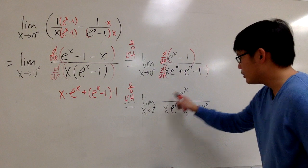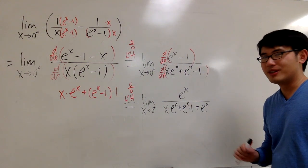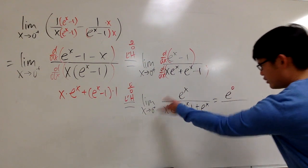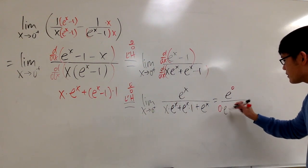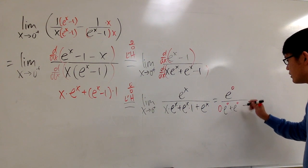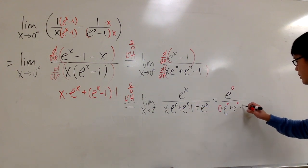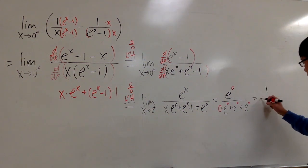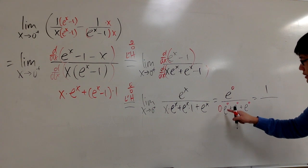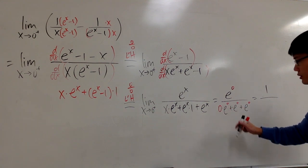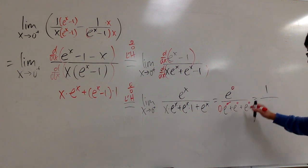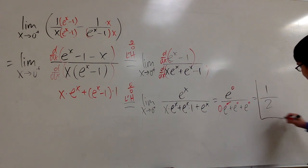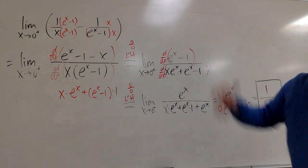Now plugging 0 into all the x — this time it's not going to be 0 over 0, we're actually done. On top, e to the 0 is 1. On the bottom, 0 times e to the 0 is 0, so that term vanishes. e to the 0 is 1, plus e to the 0 is 1, giving 1 plus 1 equals 2. Final answer: the limit is 1 over 2, which is one half.